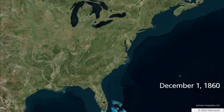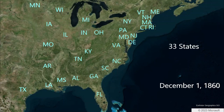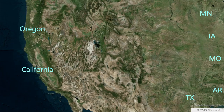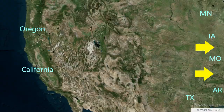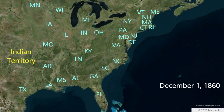On December 1, 1860, the United States consists of 33 states. This status will change this December. California and Oregon are states in December 1860. With the exception of these two Pacific states, Texas is the furthest state westward. Above Texas is the Indian Territory — modern Oklahoma — and above that is Kansas. Kansas has nearly finished its process of joining the Union as the 34th state, but in December 1860, Kansas is still a territory.